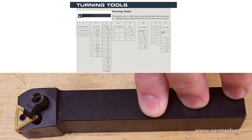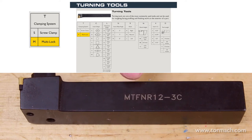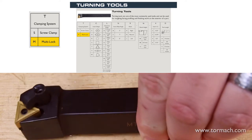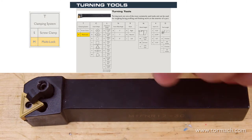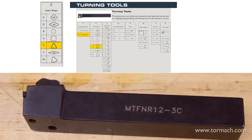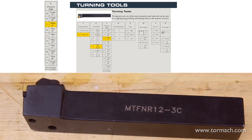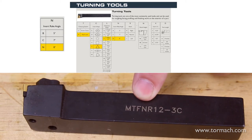This tool is a standard turning tool. The first letter in the designation for turning tools defines the clamping system. This tool has an M, which means it's a multi-lock clamping system, because there is both a clamp and a screw to hold the insert in place. The next letter defines the insert shape — this tool has a T, which means it has a triangle insert. The next letter represents the clearance angle; this tool has an F, which means it has a zero-degree end cutting edge angle on an offset shank. The next letter is for the insert rake angle; this tool has an N, so it's zero degrees.